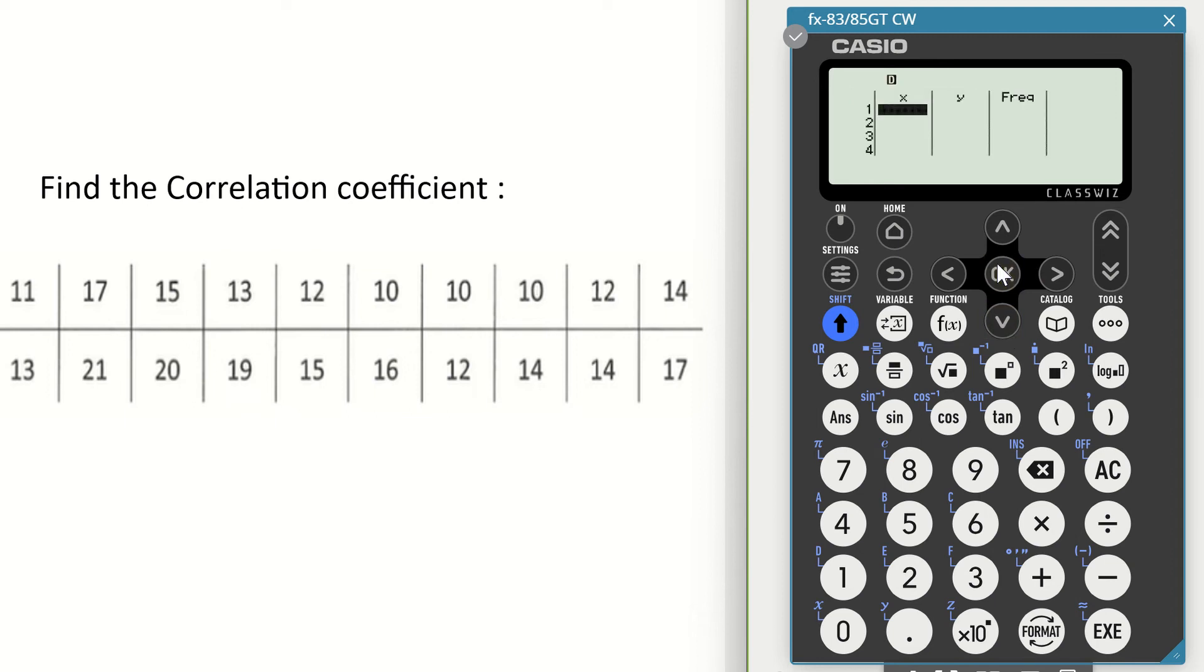We now have three columns: x, y, and frequency. As I look at the table of data, everything from the top is going to go into the x column.